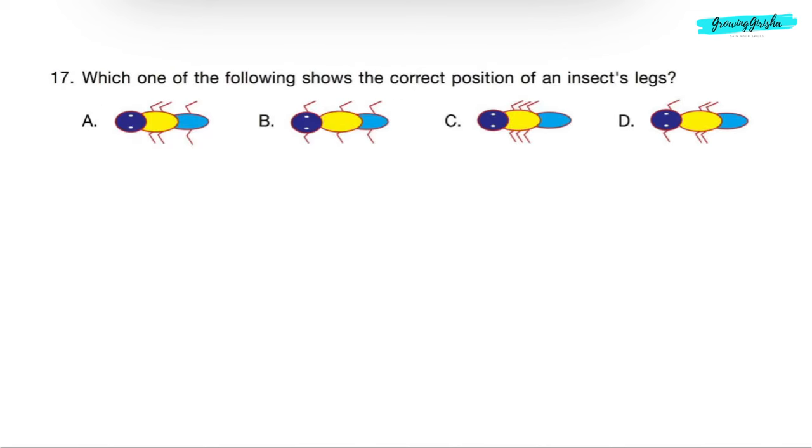Question 17: Which one of the following shows the correct position of an insect's legs? Insects have three pairs of legs present in the middle segment of their body. So correct answer will be option C.